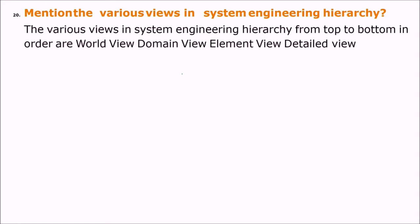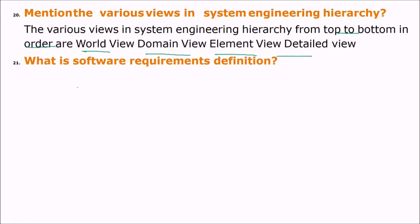Mention the various views in the system engineering hierarchy. From top to bottom, the views are: world view, domain view, element view, and detail view.